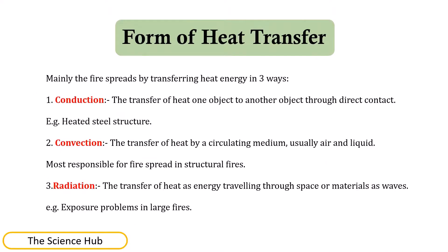Fire spreads by transferring heat energy in three ways. Conduction is the transfer of heat from one object to another through direct contact — for example, in a heated steel structure. Convection is the transfer of heat by a circulating medium, usually air and liquid, and is most responsible for fire spread in structural fires. Radiation is the transfer of heat as energy traveling through space or materials as waves — for example, exposure problems in large fires.